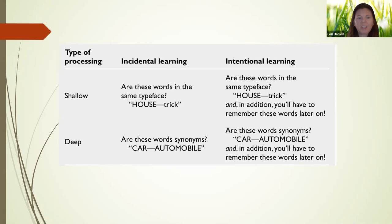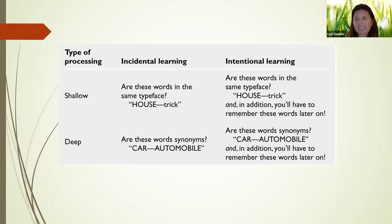Let me give you an example. We have what's called a shallow type of rehearsal or processing, which means you don't really have to think about the information much — you can rely on what it looks like visually. A question like this might ask what something looks like: are these words in the same typeface? Are they both uppercase, both lowercase? People in this study only had to answer yes or no. It's not meant to be difficult, but it's meant to force you to look at them and not have to do much else after that.